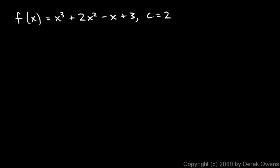Here's another problem: f of x equals x cubed plus 2x squared minus x plus 3, and c equals 2. We want to find f prime of 2 — the derivative at x equals 2. So let's find f of 2 first: f of 2 is 2 cubed plus 2 times 2 squared.